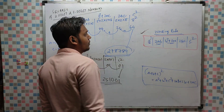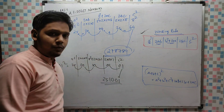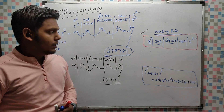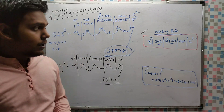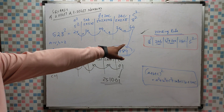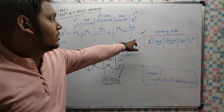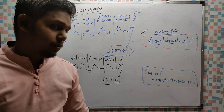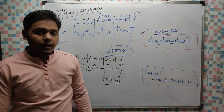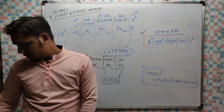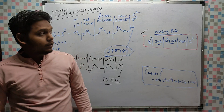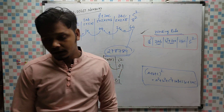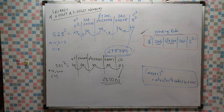Remember this formula for 3-digit numbers: a², then 2ab, then (b² + 2ac), then 2bc, then c². You can take a screenshot of this formula. This is the end of the video — I hope you understand after watching. Thank you for watching.